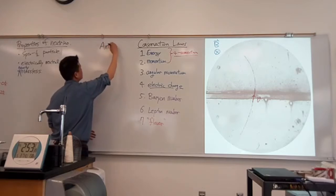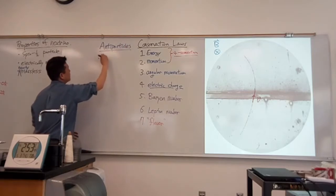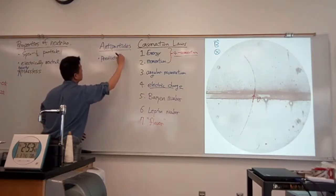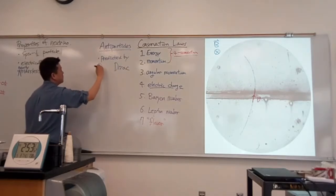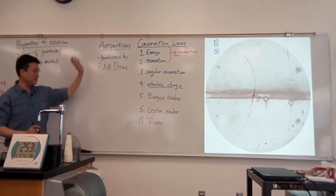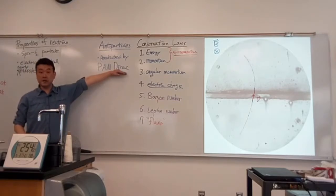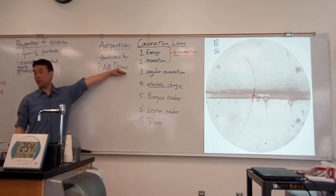These antiparticles were predicted by Dirac. That's the name of the scientist, P.A.M. Dirac—I think P stands for Paul. He is credited with coming up with something called the Dirac equation. It's the relativistic quantum mechanical equation that applies for spin-half particles. One of the predictions of the Dirac equation is